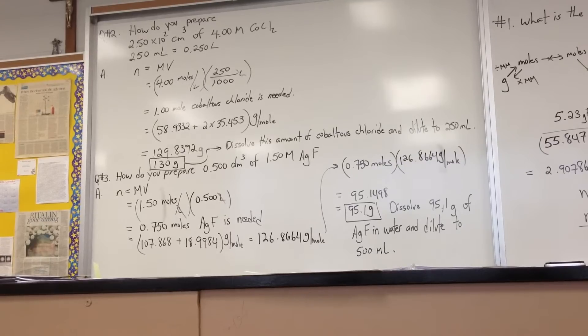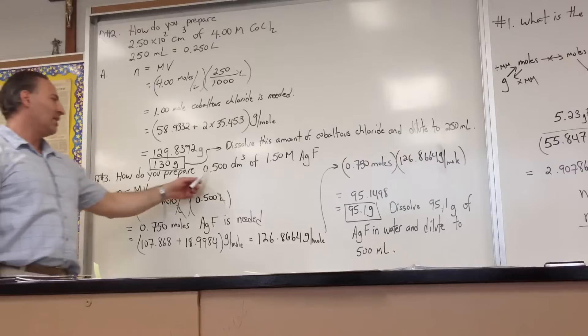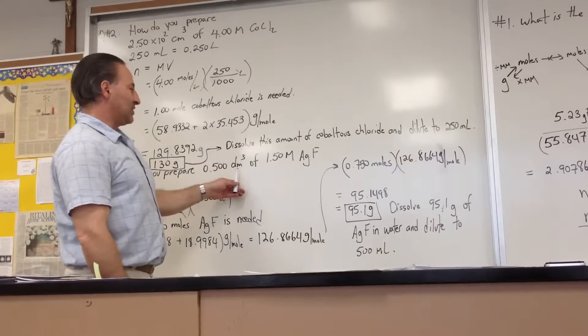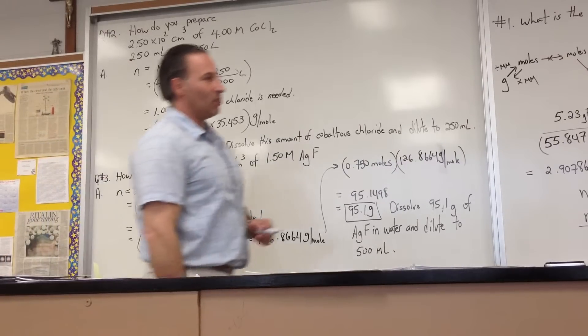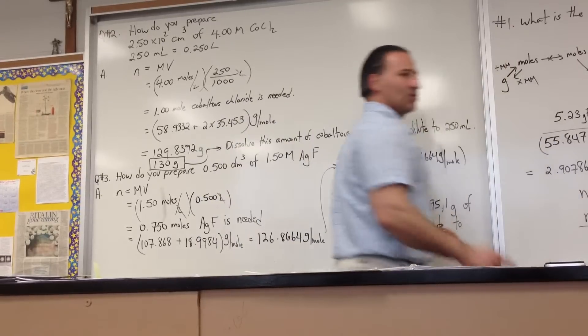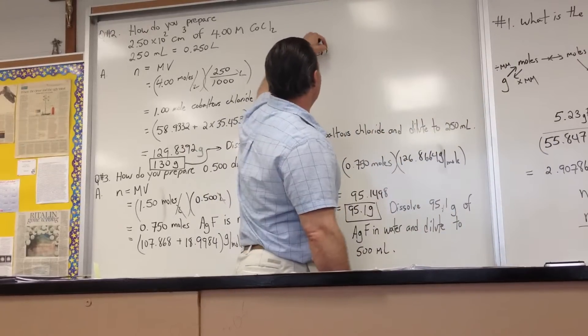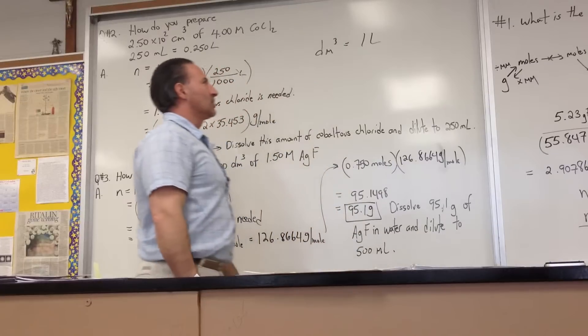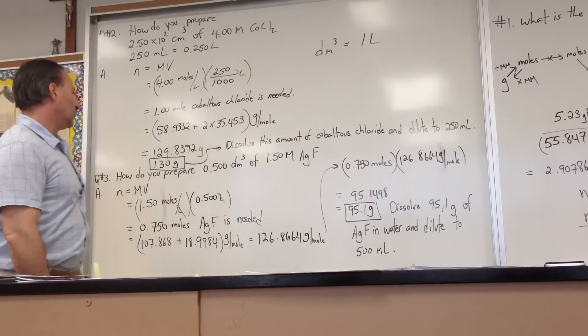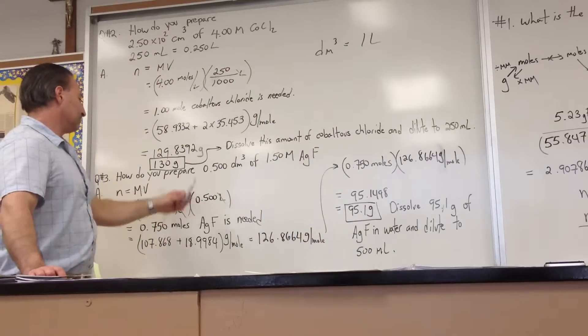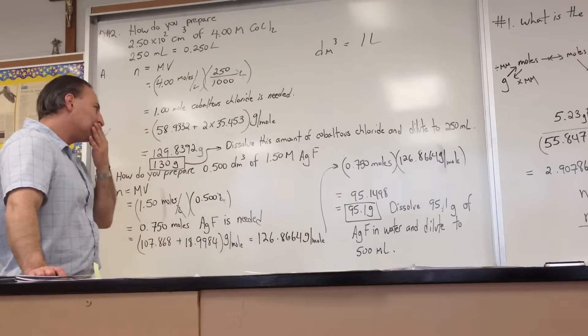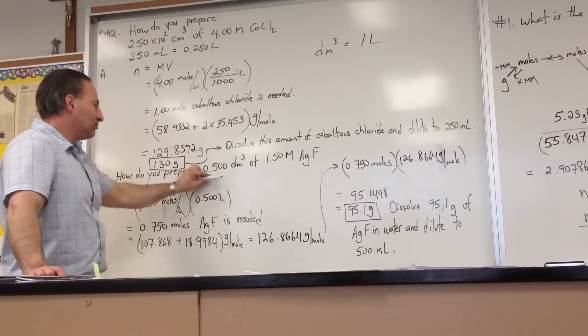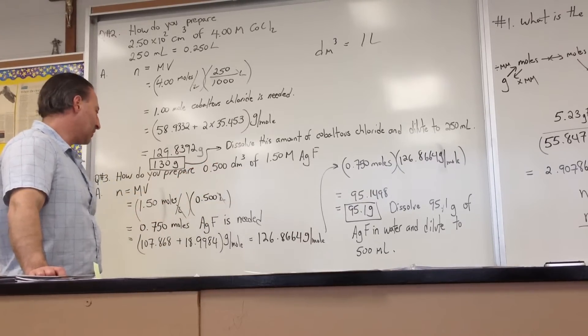And the third question, we're asked, how do you prepare half a liter? It says decimeter cubed - I forgot to mention that one decimeter cubed is equal to one liter. That's good to know. So half a liter, half of a decimeter cubed is the same as half a liter.